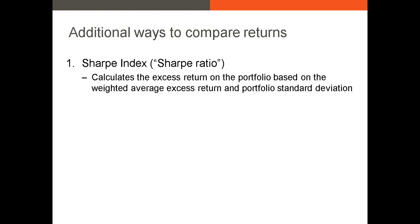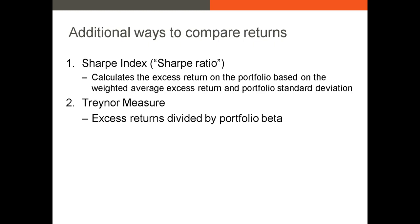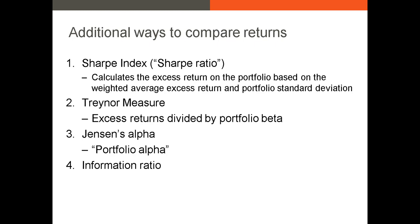Now let's talk about the performance metrics we can use. You've already seen some of these in earlier classes, but they're extremely important in portfolio management. First, we'll talk about the Sharpe ratio — in portfolio management it's often called the Sharpe index. Next, we'll talk about the Treynor measure, which is very similar to the Sharpe index except that our denominator is the portfolio beta. Then I'll walk you through the calculation of Jensen's alpha, which is essentially the portfolio alpha and represents the amount by which the portfolio outperformed what it was predicted to return based on its beta. Finally, I'll show you the information ratio, which is a measure of alpha over residual returns.